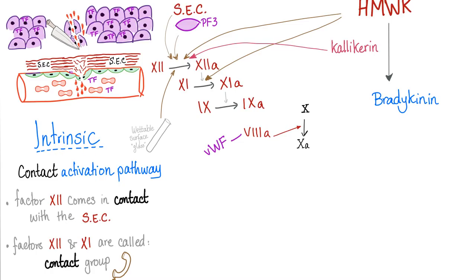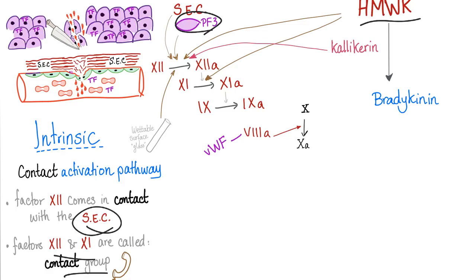The intrinsic pathway is also known as the contact activation pathway because it starts with the contact group. They have to come in contact with the basement membrane, specifically the subendothelial collagen. What else stimulates them? Platelet factor 3 and the great high molecular weight kininogen. High molecular weight kininogen activates factor 12 into 12a and factor 11 into 11a.